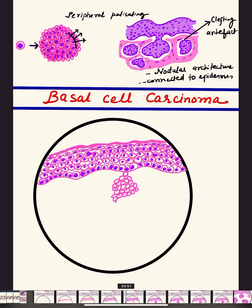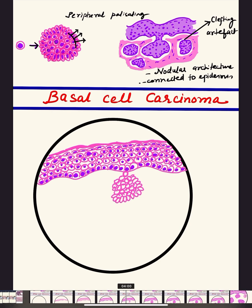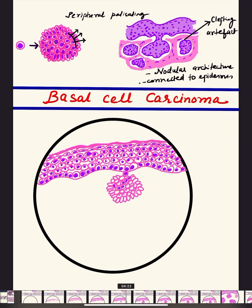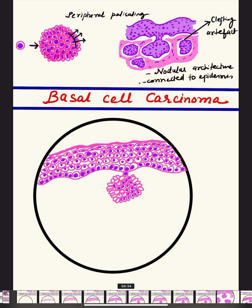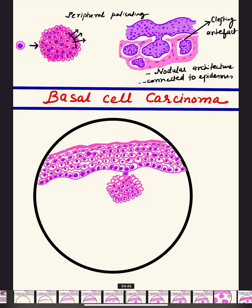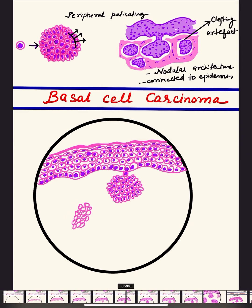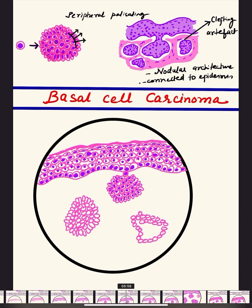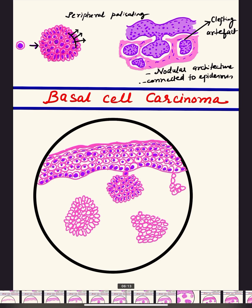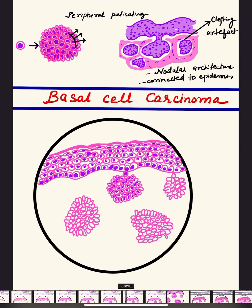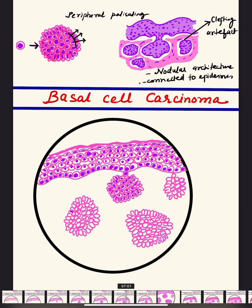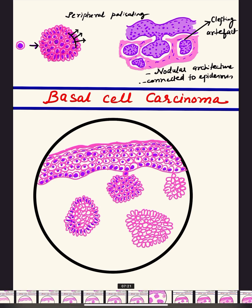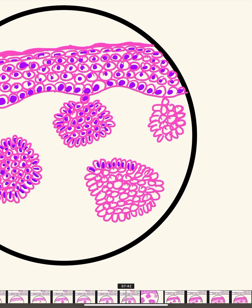Now we draw a tumor nodule with peripheral palisading of the cells visible on the outside. The nucleus is drawn — these are the basaloid cells, small in size with a central nucleus and scanty cytoplasm, giving a blue-looking tumor nest. These tumor nests and tumor islands are seen penetrating the dermis, reaching even the deep dermis. We draw multiple nodules showing peripheral palisading of the nuclei in the outermost layer — this is the nodular variant of BCC.